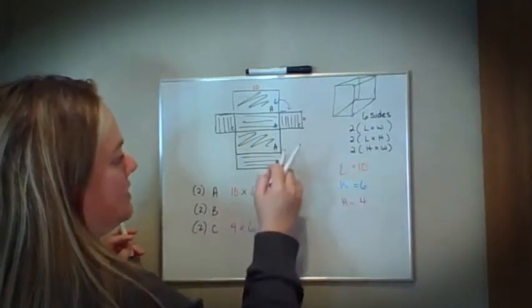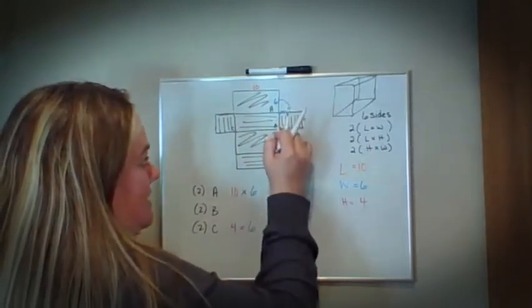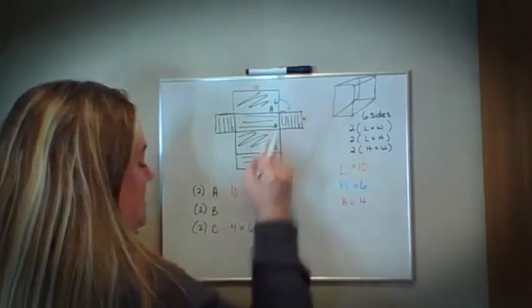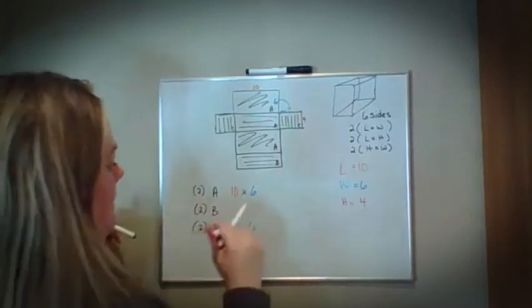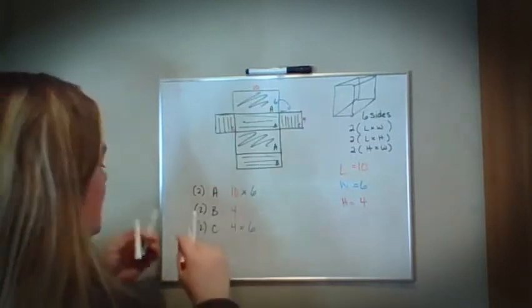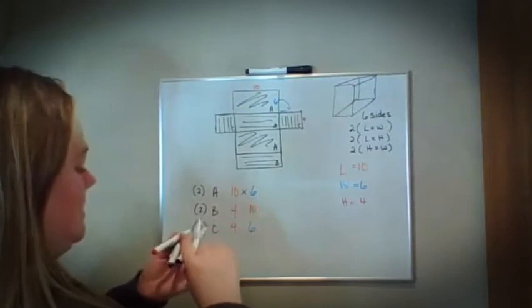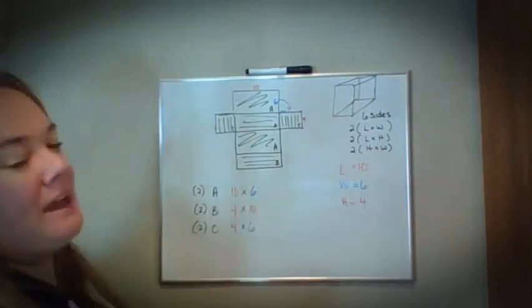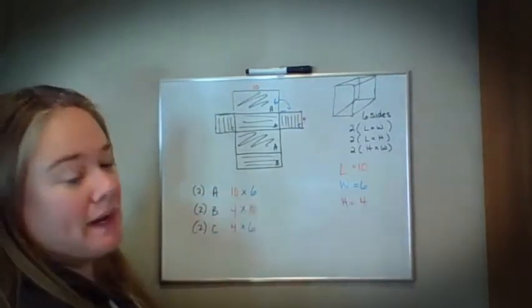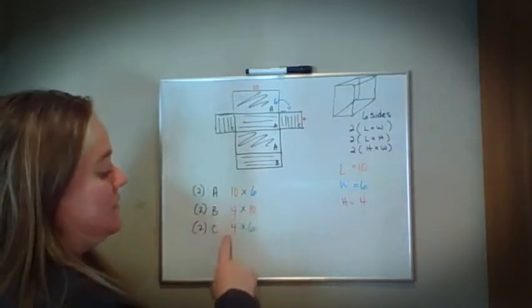My last one is going to be this small piece that's right here. Notice that this is symmetrical with this, they're parallel to each other. So this is 4 and this is 4. So I'm going to have a 4 by this length, which is a 10, a 4 by 10. If you notice when I did this, each time, I'm going to use my length twice, my width twice, and my height twice.